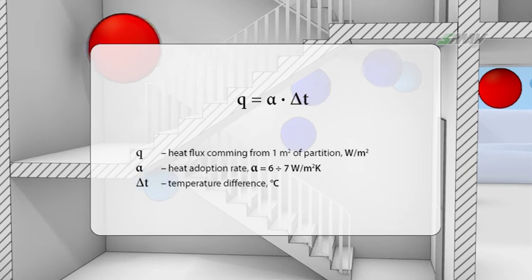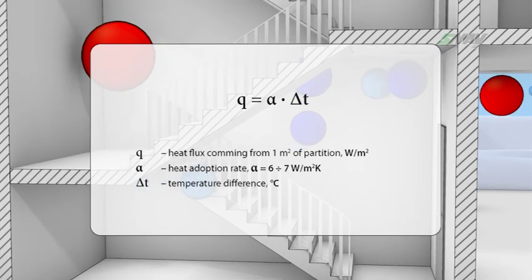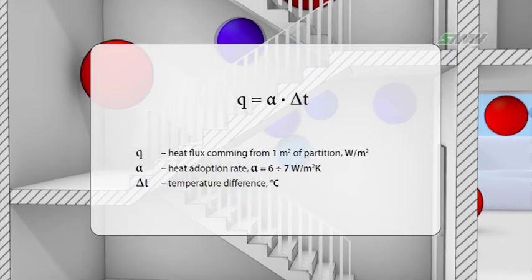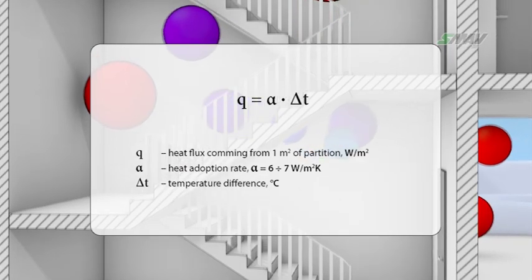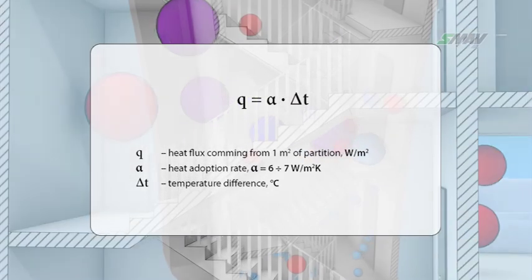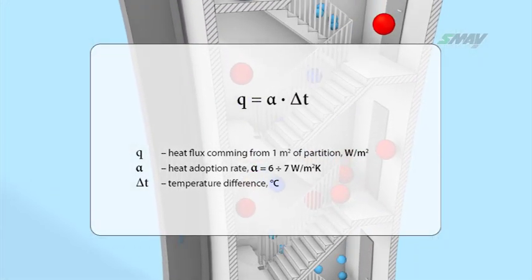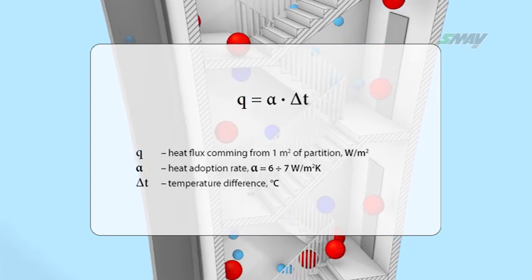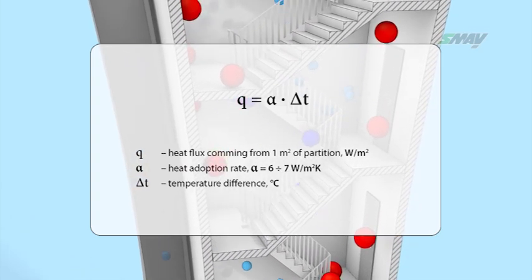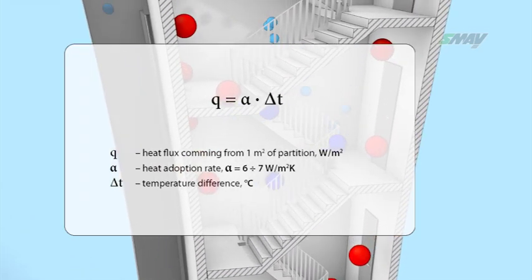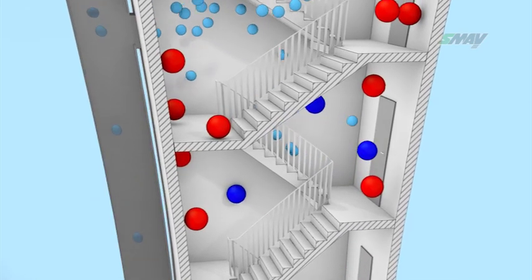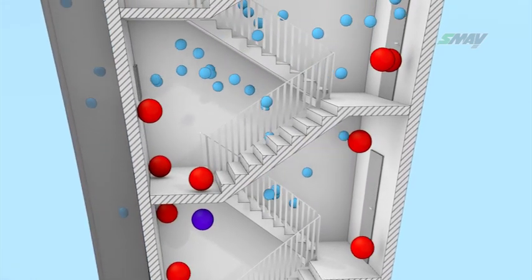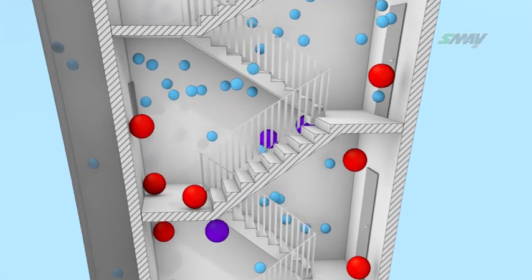As an example, to heat 1 cubic meter of air by 10 degrees in 10 minutes, it should be heated with a 22 watt energy stream. In order to reduce the temperature of 1 cubic meter of concrete by 10 degrees in the same amount of time, roughly 34,000 watts of cooling power would have to be provided, which is 1,550 times as much.